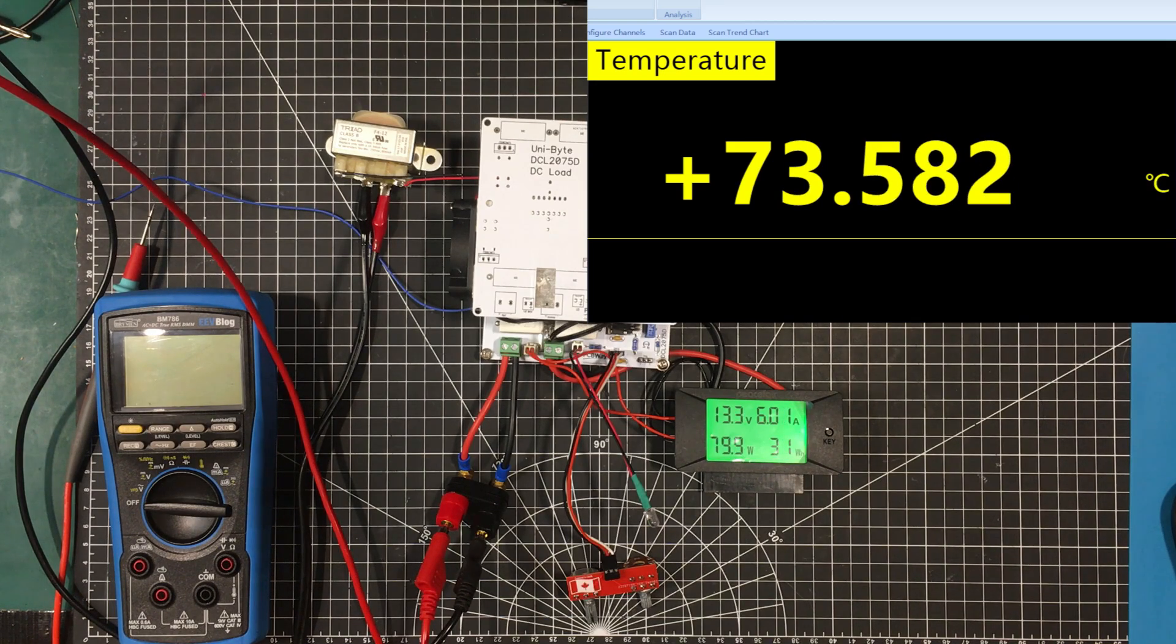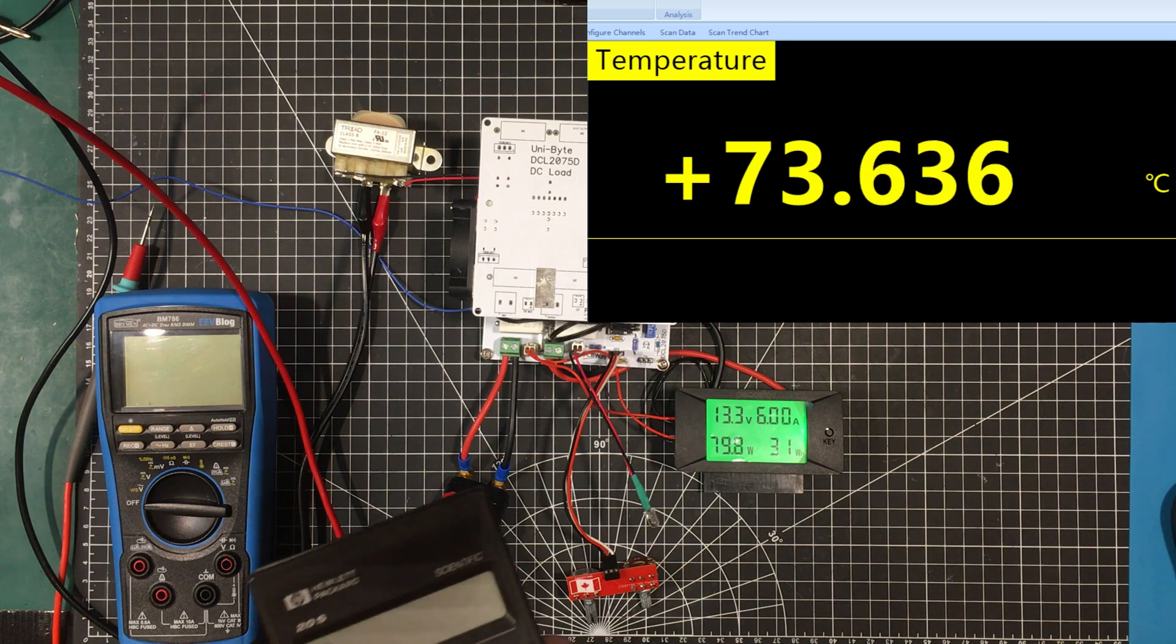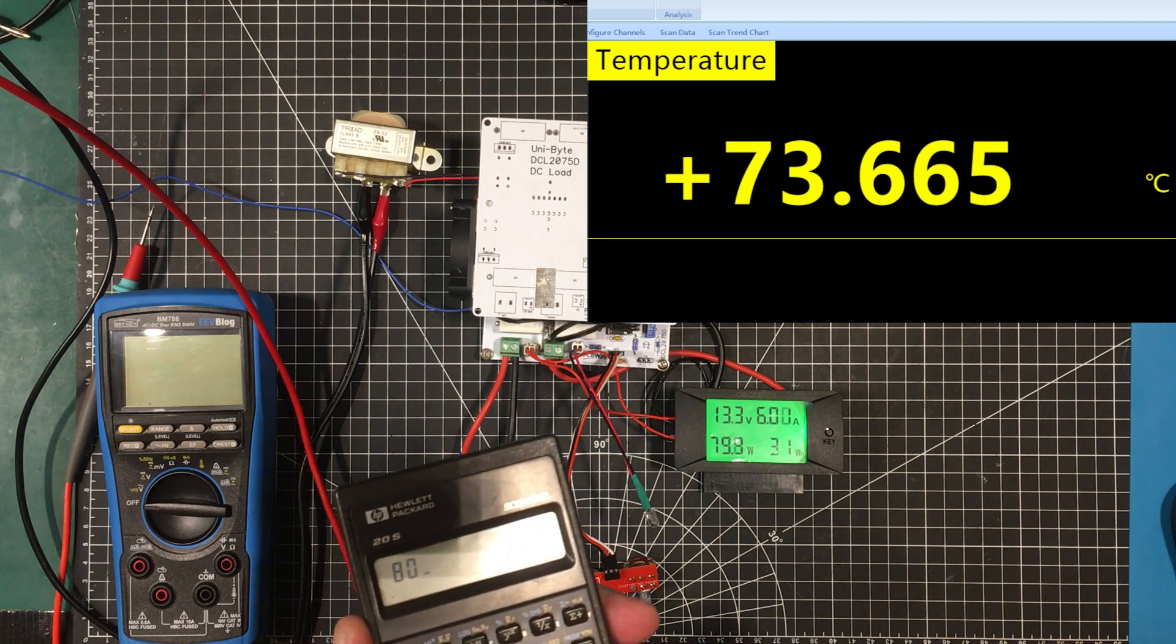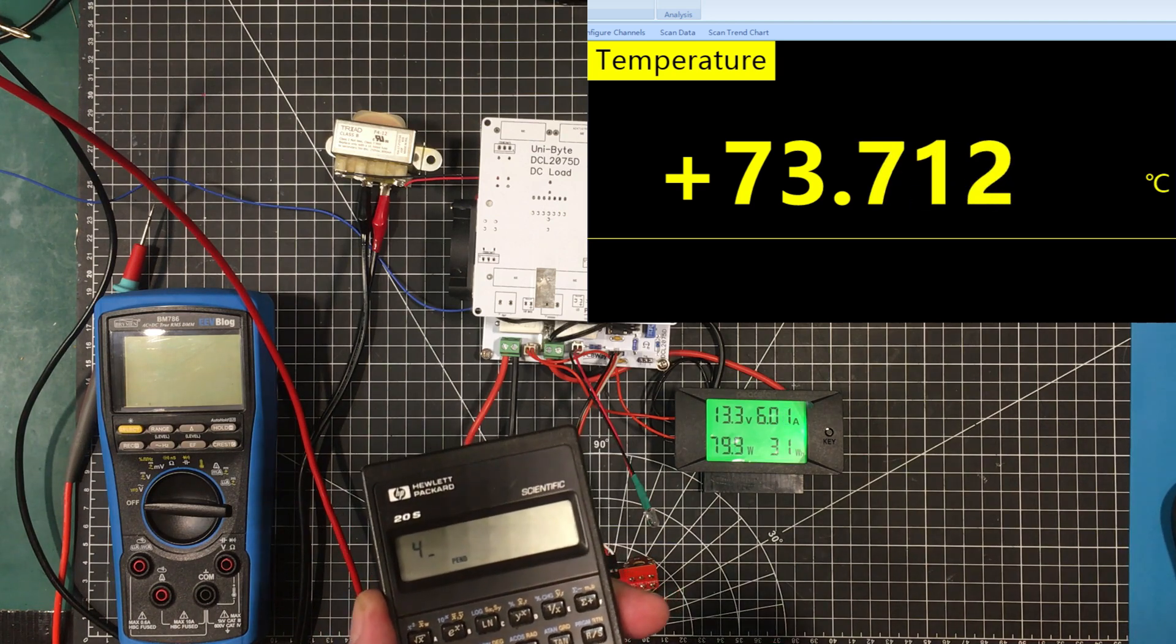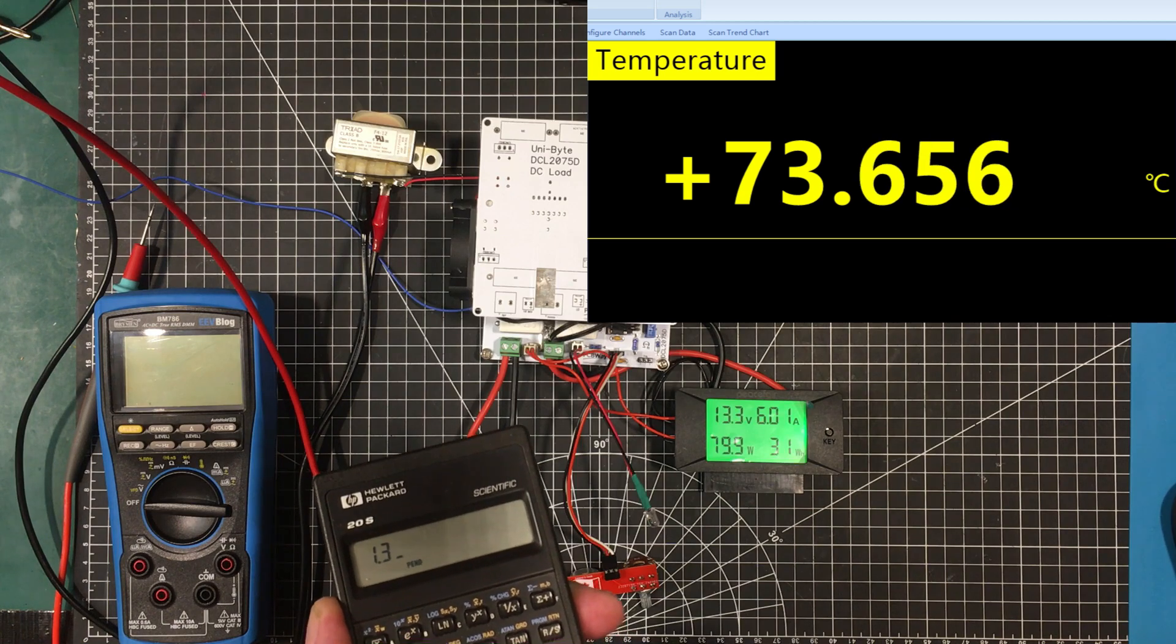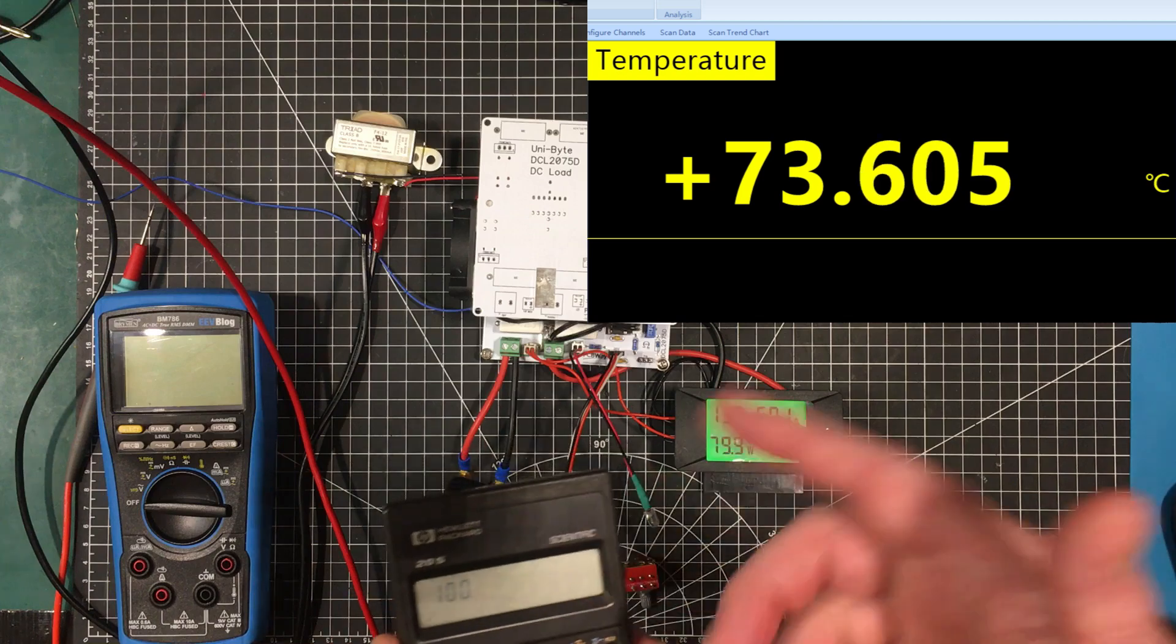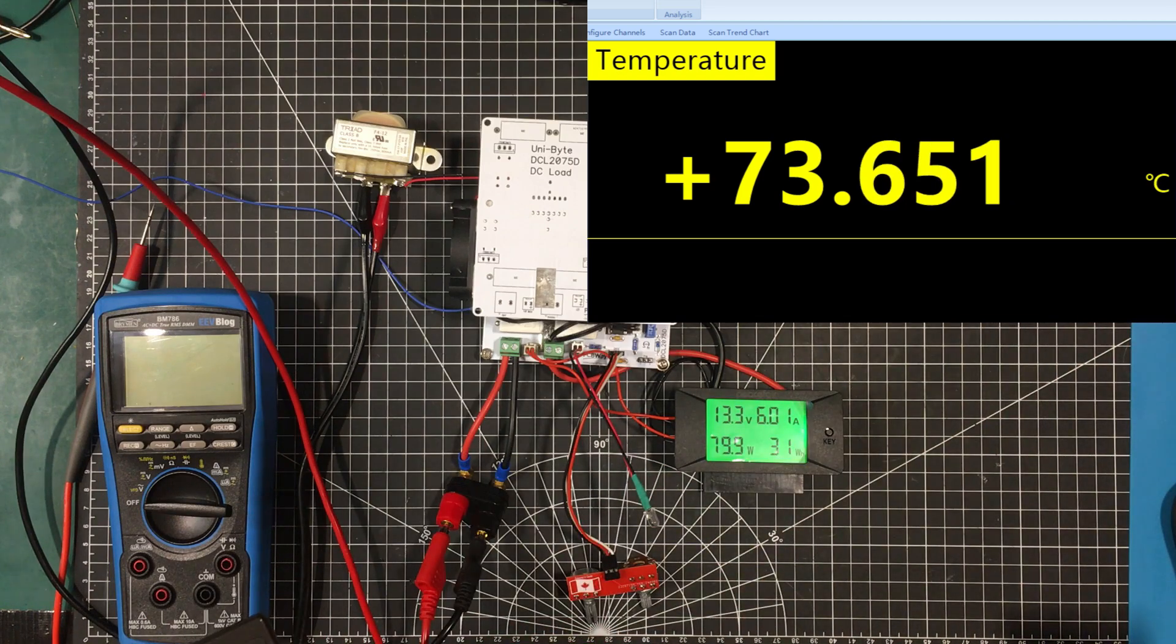It looks like the fan stepped up in speed a little bit and we're narrowing in on about 74 degrees C at 80 watts. So let's do our calculation here: 80 divided by 4 times 1.3 plus let's call it 74. So we're at 100. We've still got 75 degrees to go. Let's bring it up to 100.